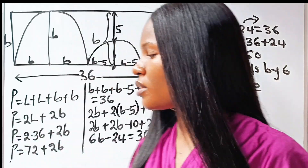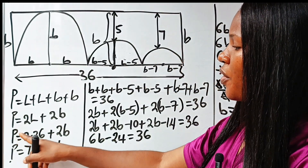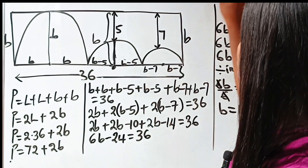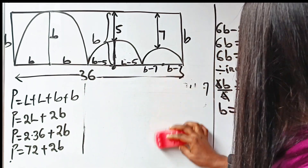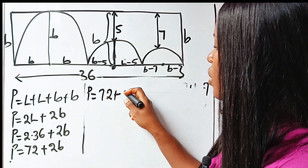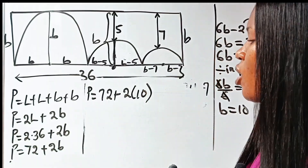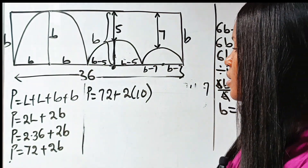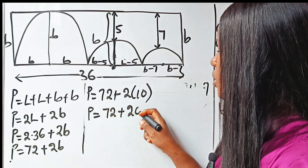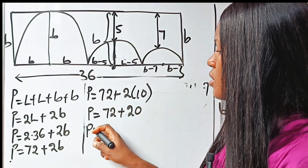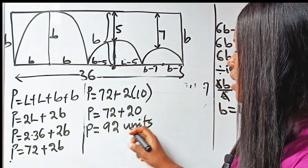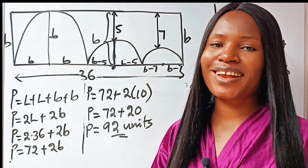Now let's go back to the question. We are asked to find the perimeter, and we already have the perimeter as 72 plus 2B. So the perimeter is 72 plus 2 times 10, which is 72 plus 20. The perimeter is 92 units. Thank you so much for watching — see you in my next video.